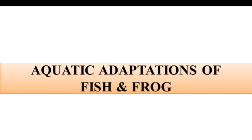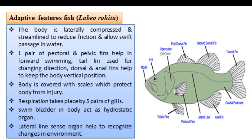Students, now we are going to discuss the aquatic adaptation of frog and fish. If we look at the aquatic adaptation of fish, what are the aquatic features of fish? If we come to the exam, write the aquatic adaptation of fish. The fish is identified as Labio rohita. We are going to observe the fish and examine the adaptive features of fish.